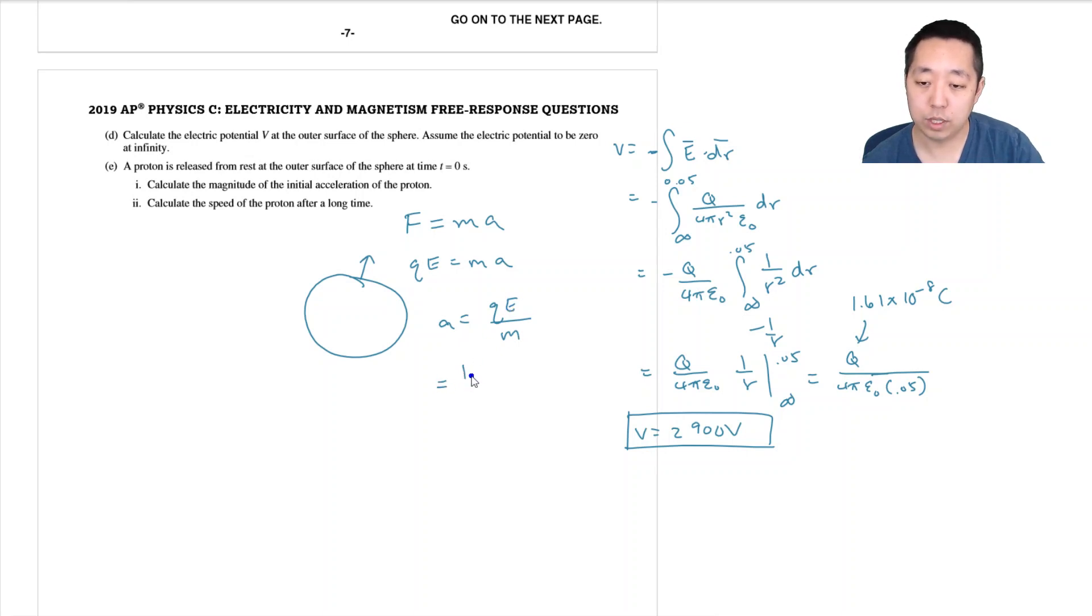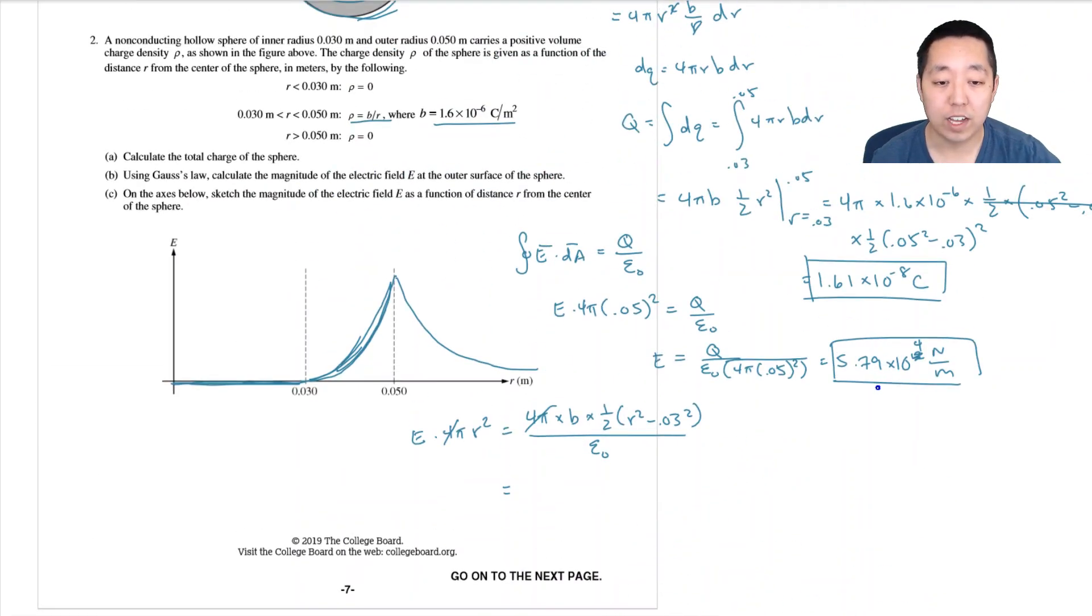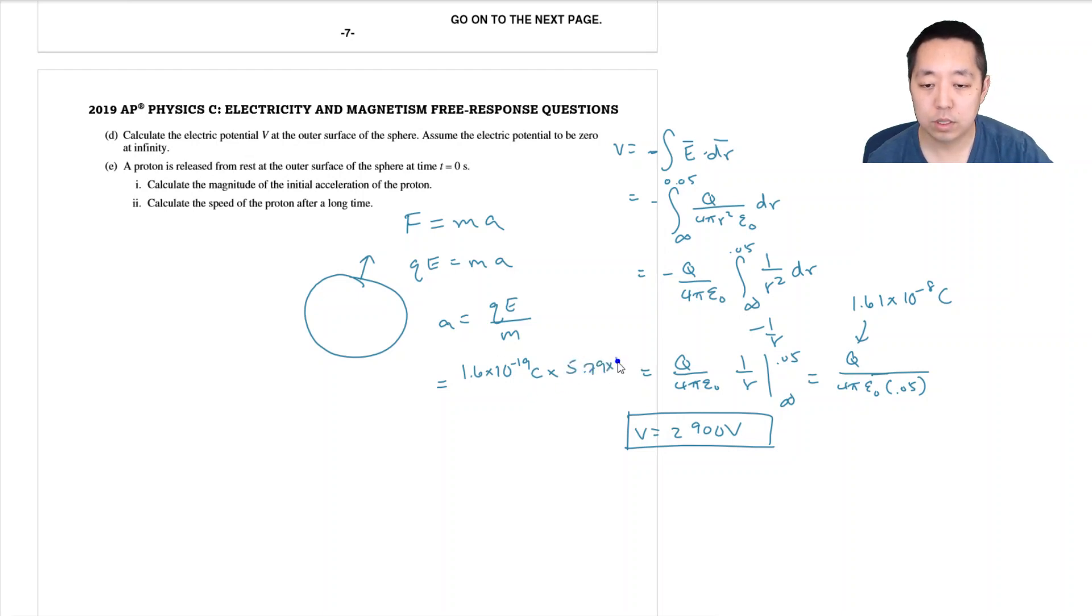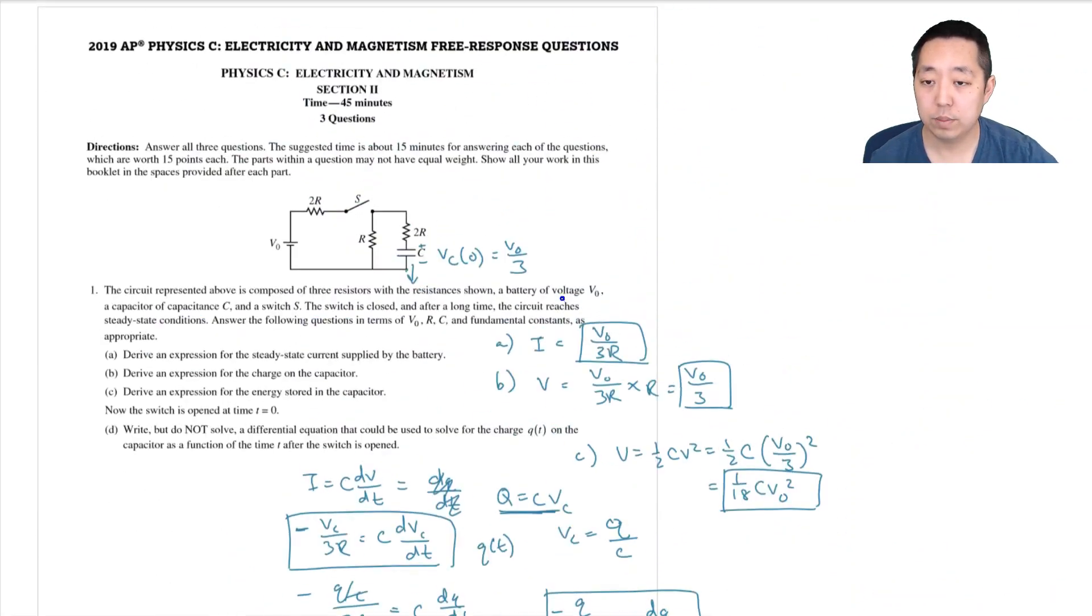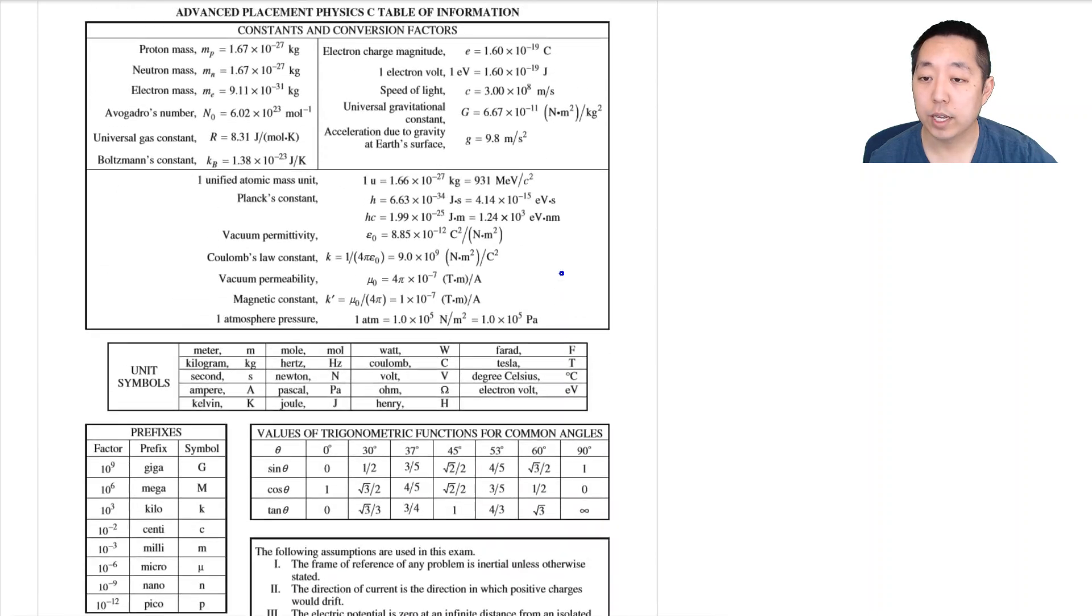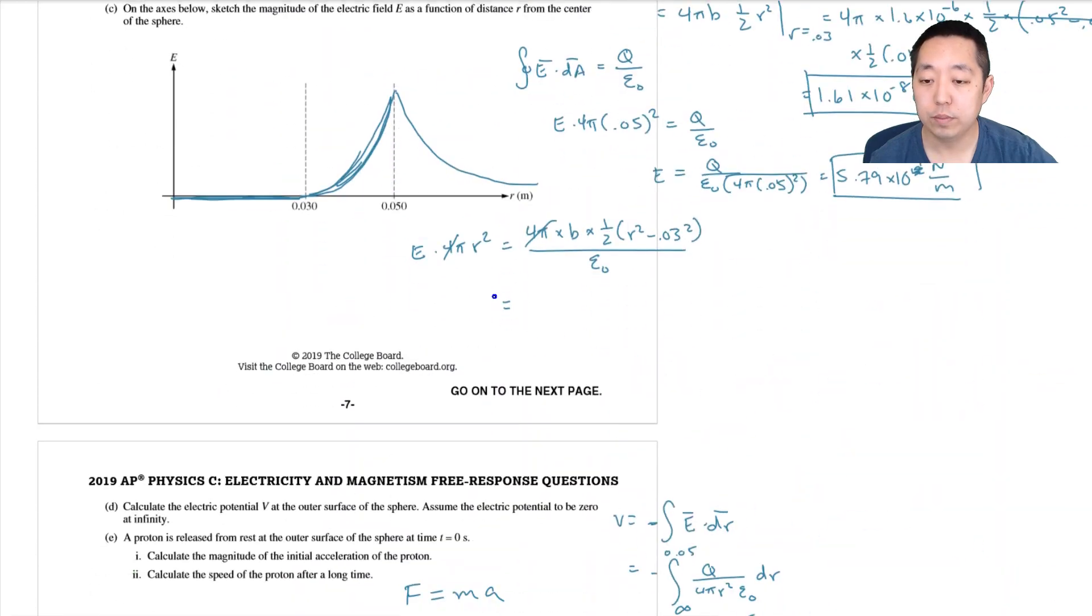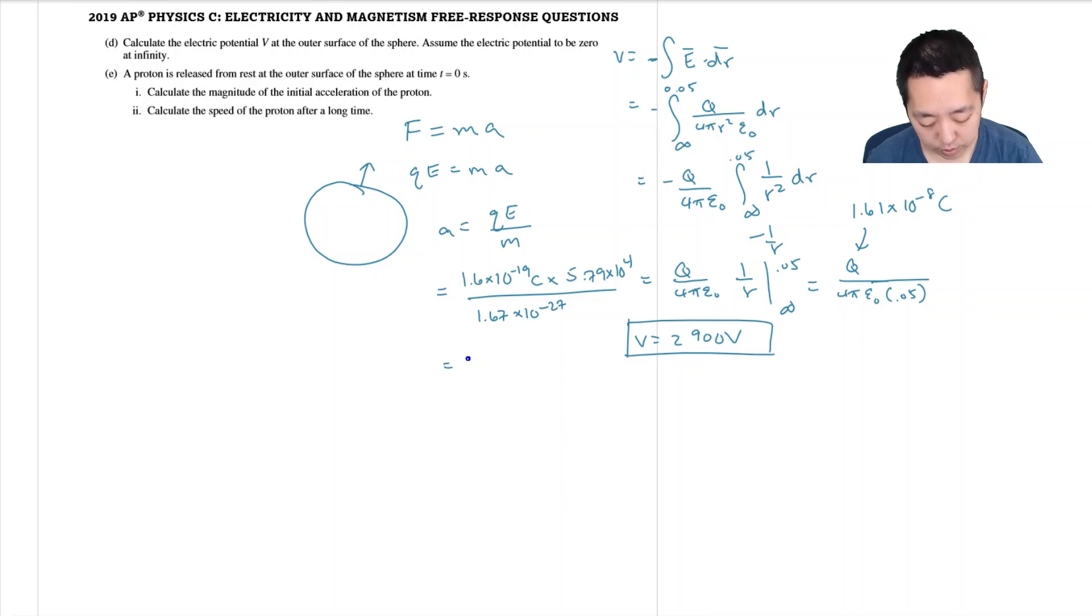And I'll actually solve for these because the charge of a proton is 1.6 times 10 to the minus 19 coulombs. The electric field, what did we get the electric field to be, was 5.79 times 10 to the 4. And then the mass of a proton, it's a constant, it's 1.67 times 10 to the minus 27. I want to double check that, just to confirm that I get the mass of a proton and not mass of an electron. Mass of a proton, 1.67 times 10 to the negative 27. Alright, good. I did that right. So the acceleration would be, so 1.6 e minus 19 times 5.79 e 4 divided by 1.67 e minus 27. Equals 5.55 times 10 to the 12 meters per second squared.